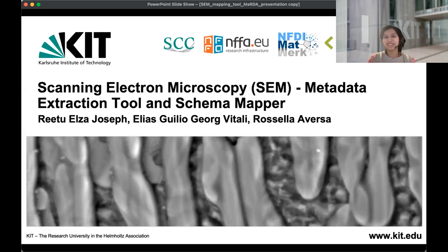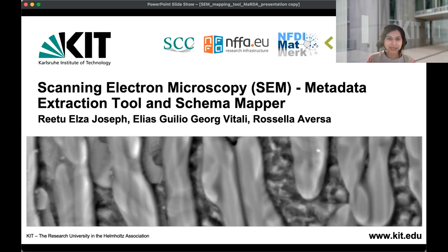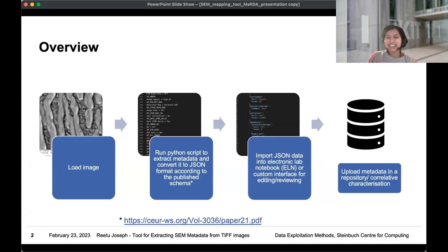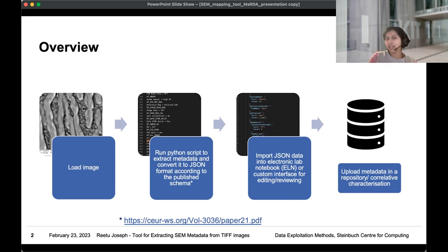After a couple of months, we have this solution — a tool for extracting metadata. We started with scanning electron microscopy, specifically for machines manufactured by Zeiss. Scanning electron microscopy images in TIF format were used, the metadata inside these images was read, and then mapped to a schema. You essentially load your image into the tool, the tool reads your metadata from the image, maps it to the schema using the published schema terminology, and you get an output in JSON format according to the schema.